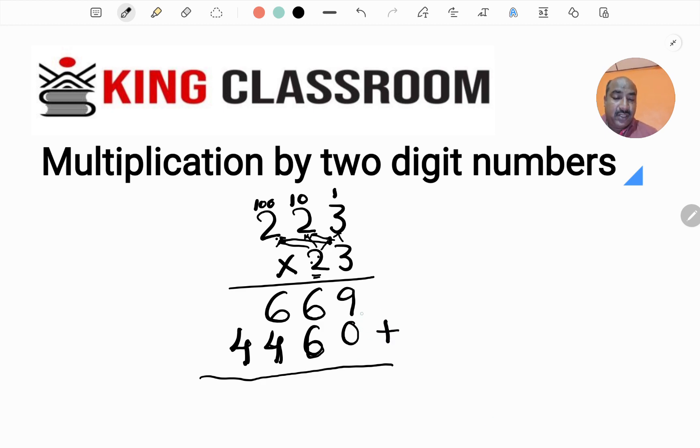9 plus 0 is 9. 6 plus 6 is 12, write 2 and carry 1 forward to 100's place. 1 plus 6 is 7, 7 plus 4 is 11, write 1 and carry 1 to 1000's place. 1 plus 4 is 5. The result is 5129.